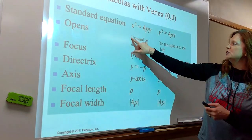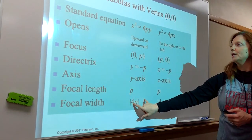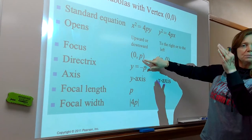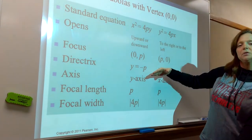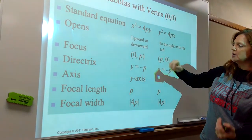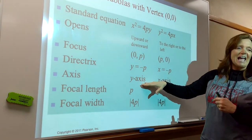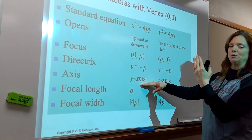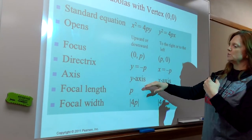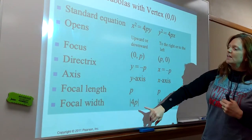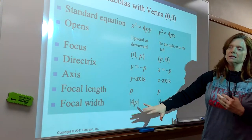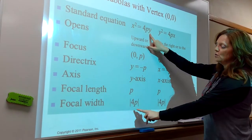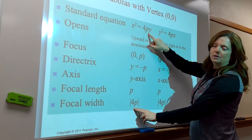For up and down parabolas, the standard form is x² = 4py. The focus is p units away, and the directrix is p units away in the other direction. The main axis is the y-axis. The focal length is p, and the focal width is 4p. So if I had x² = 8y, the focal width would be 8.